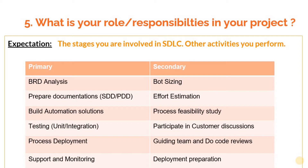To answer this question, I have listed out some of the roles that are played by any developer in a typical RPA project. I have segregated those roles into two: primary and secondary. Primary roles are the key activities that you perform majorly, and secondary activities you might do, or only some of your team members do — probably a senior developer or a team leader. All these roles might vary depending upon your organization or project hierarchy.